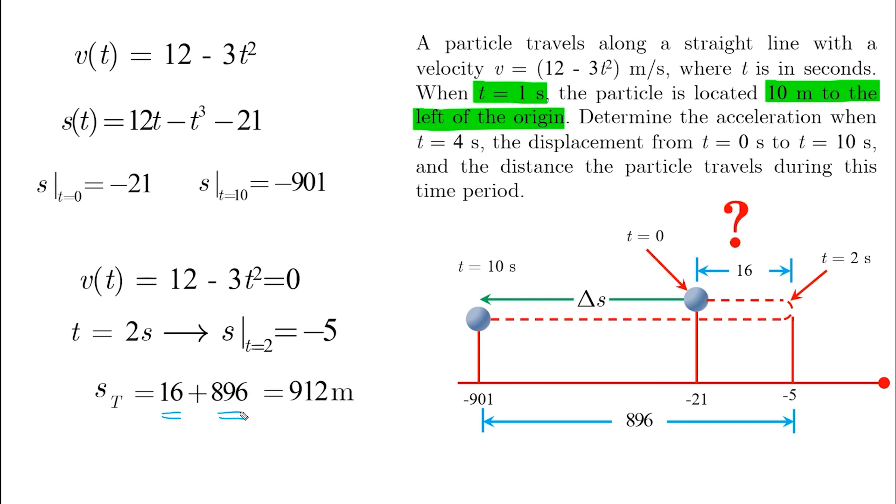Can you find the initial conditions somewhere along the dash line? Think about it.